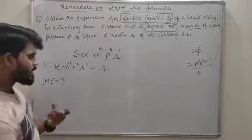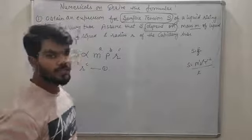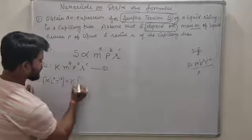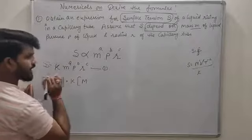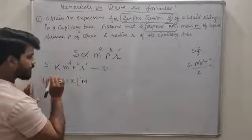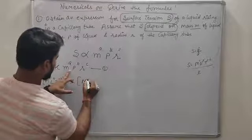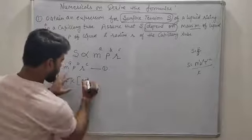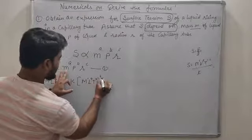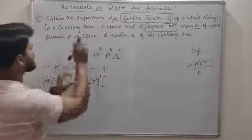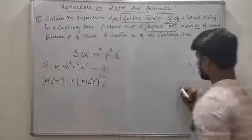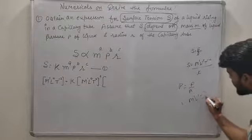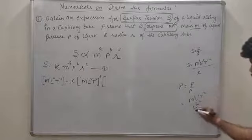Complete लिखो क्योंकि comparison करना है — जहाँ 0 हो वहाँ 0 लगाओ। M is the mass — mass का dimension M है, L नहीं है, T नहीं है। P is the pressure — pressure का dimensional formula याद होना चाहिए: M1 L1 T-2 upon L2 — cancel out करो।